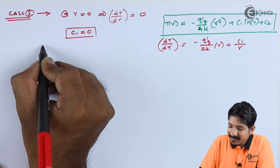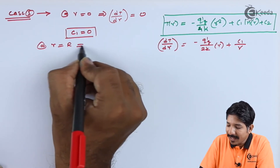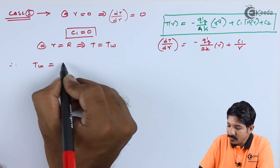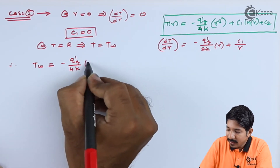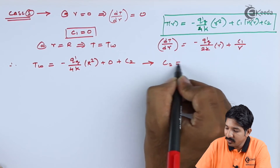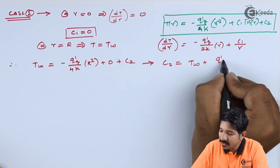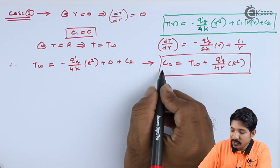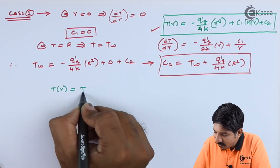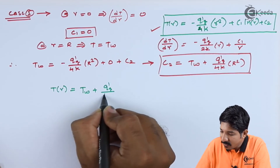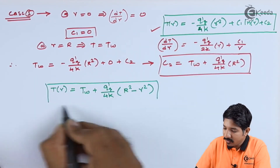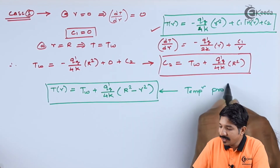C₁ = 0. The second boundary condition is at r = R, T = T_W. Substituting, T_W = -Q'_G/(4K) · R² + C₂, which gives C₂. Substituting both C₁ and C₂ back into the temperature profile: T(r) = T_W + Q'_G/(4K) · (R² - r²).